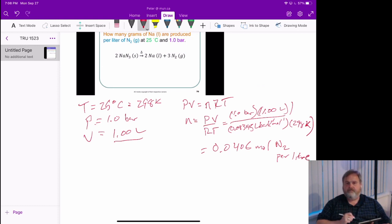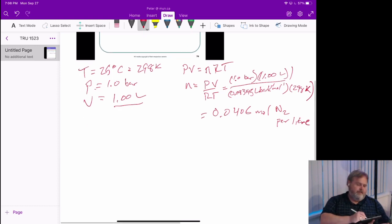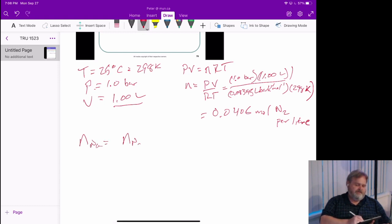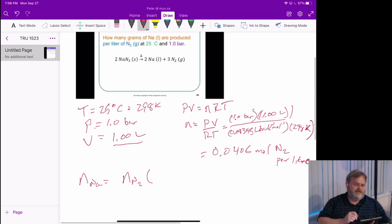Now, the number of moles of sodium we see should be related to the number of moles of nitrogen by the stoichiometric coefficients. We make 2 sodium for every 3 nitrogen.